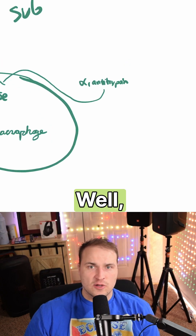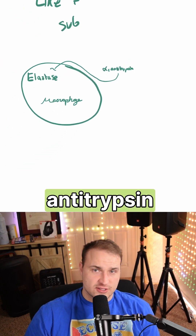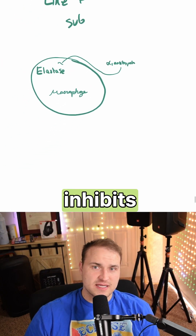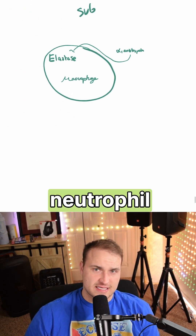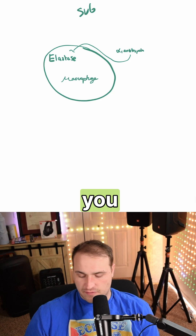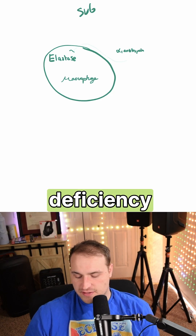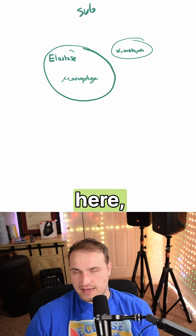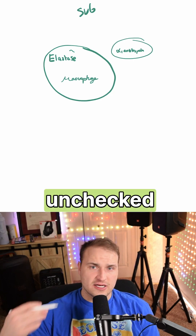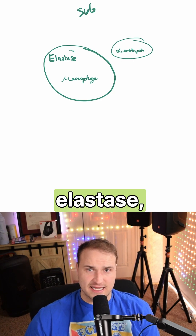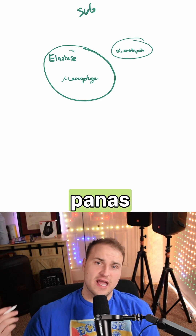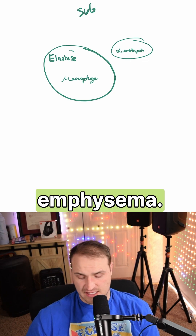How does this relate to alpha-1-antitrypsin? Alpha-1-antitrypsin inhibits neutrophil elastase. So if you have this deficiency, then you get unchecked elastase, and that causes panacinar emphysema.